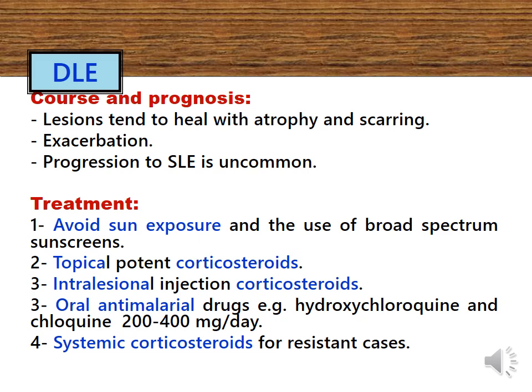The main line of treatment is to avoid sun exposure and use broad-spectrum sunscreens. Second, corticosteroids by all forms, including topical potent applications, intralesional injections, or systemic steroids for resistant cases. Third, oral antimalarial drugs such as hydroxychloroquine and chloroquine may be used, and they are very effective in cases of discoid lupus.